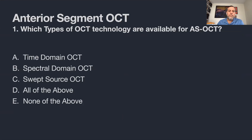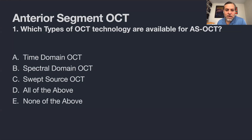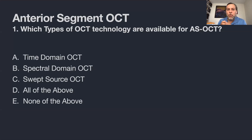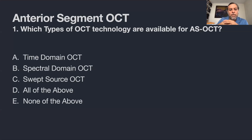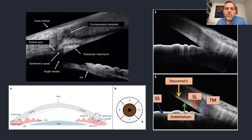Poll question: which types of OCT technologies are available for anterior segment OCT? The answer is all of the above — time domain OCTs, spectral domain OCTs at 840/820 nanometers, and swept source OCT. Most OCTs on the market can do both anterior and posterior segment. Swept source OCT gives the best resolution for anterior segment because of its deeper wavelength penetration.